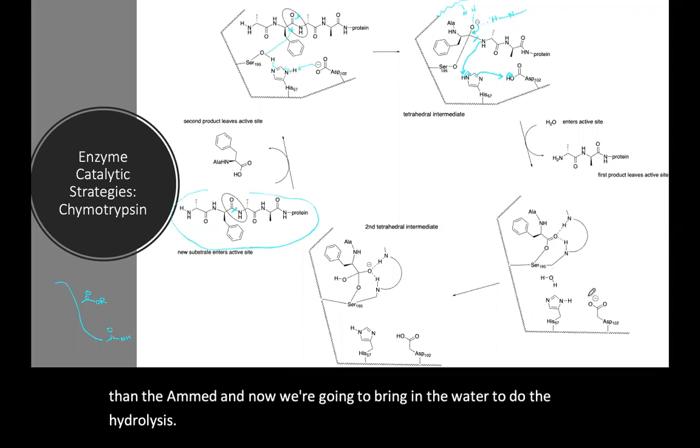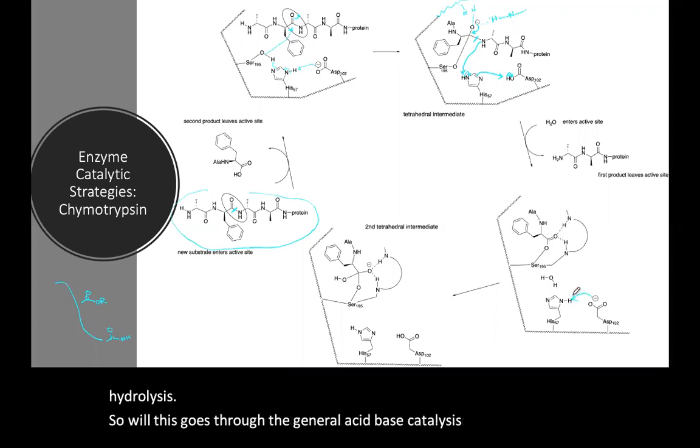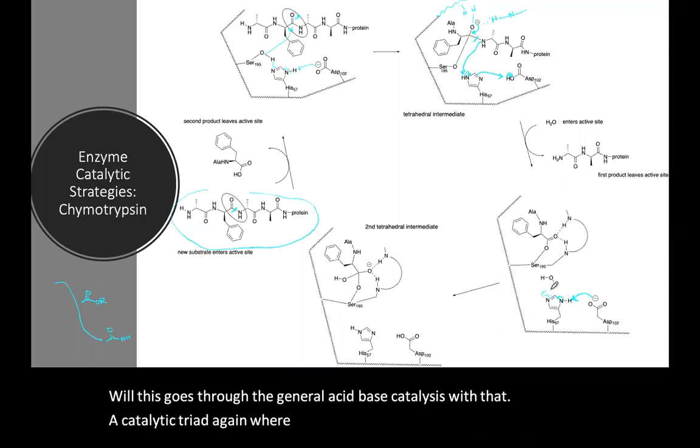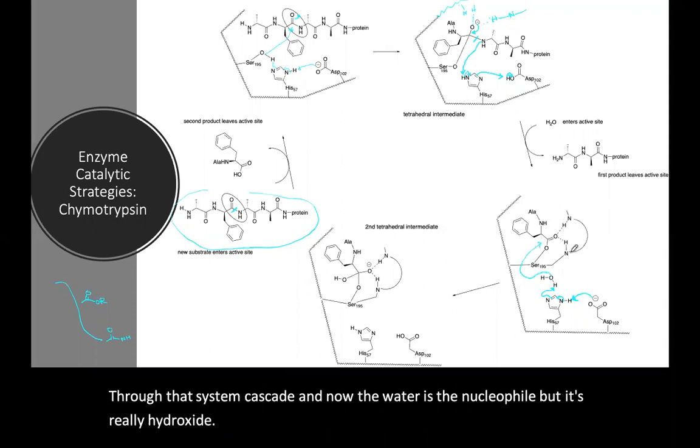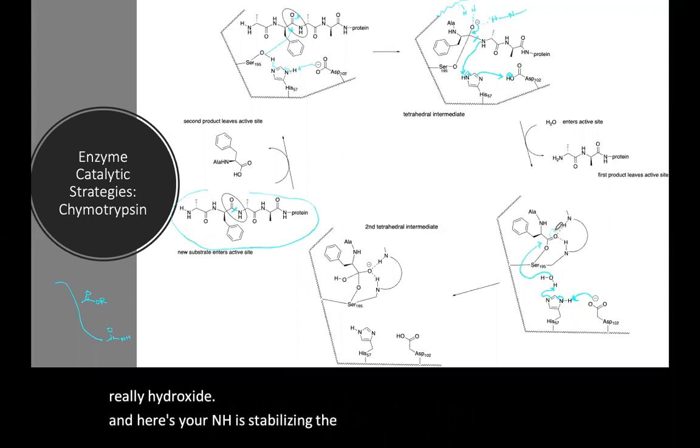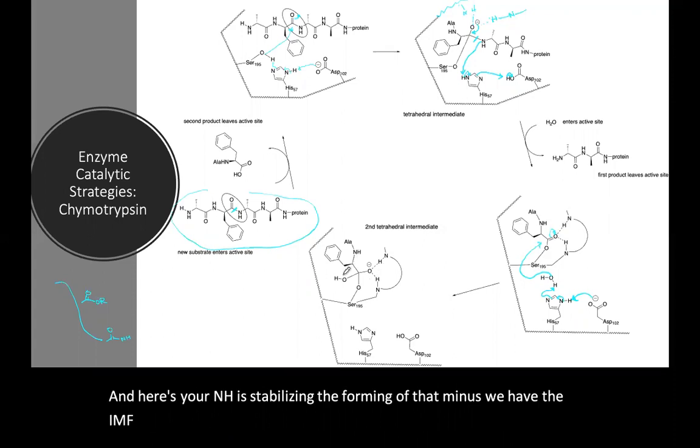So this goes through the general acid base catalysis with that catalytic triad again where we transfer those electrons through that system cascade and now the water is the nucleophile but it's really hydroxide. And here's your NHs stabilizing the forming of that O minus. So we have the IMF stabilization of this tetrahedral intermediate.